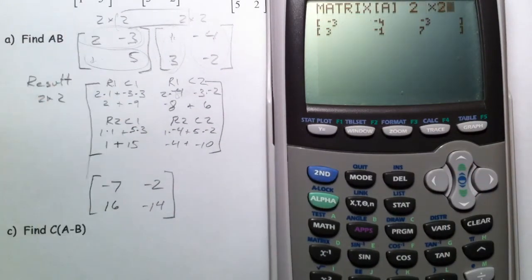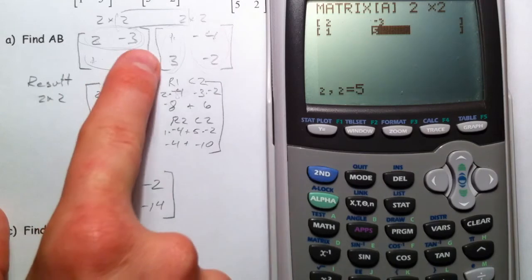We want to edit the matrix. We have a 2 by 2, so you want to make sure you put the right dimensions in there. 2, negative 3, 1, and 5. If you just keep hitting enter it will go to the next spot. And so that's my matrix A.